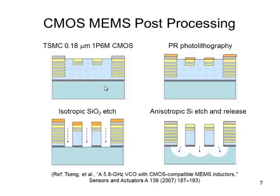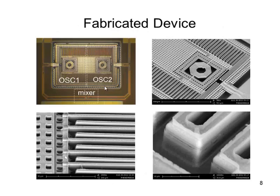First, there is anisotropic SiO2 dry etch, then isotropic silicon etch to release the device. This process is offered by CIC in Taiwan according to these publications.